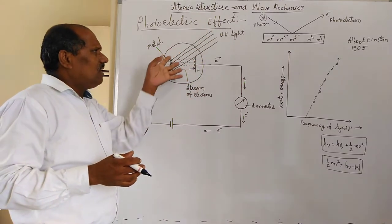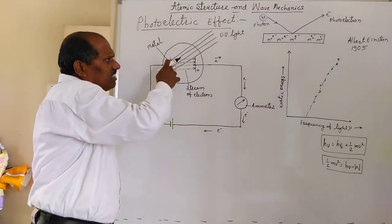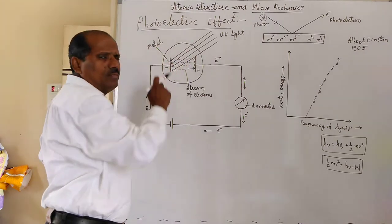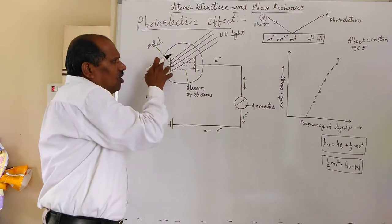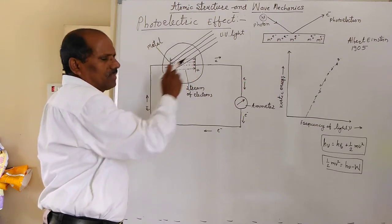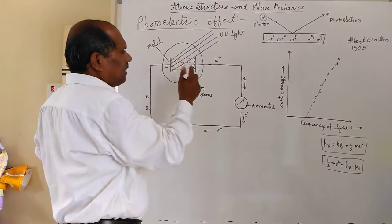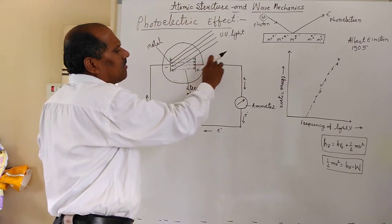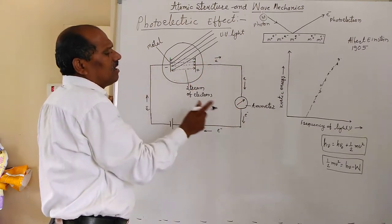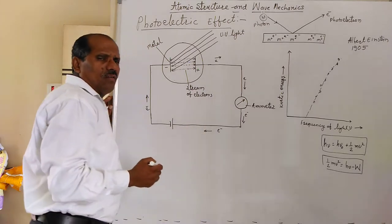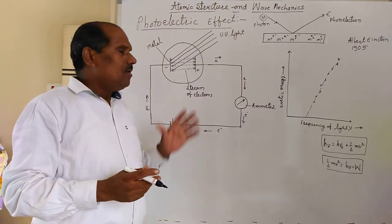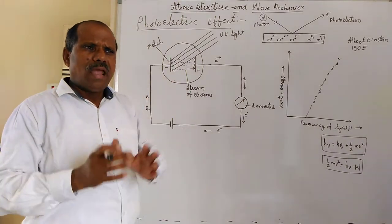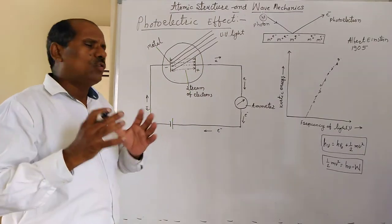When a beam of light of a sufficiently high frequency is allowed to strike on a metal surface in a vacuum, then electrons are ejected from the metal surface. Those electrons are pulled by the anode and start to flow through the circuit, and current is observed. This effect is called the photoelectric effect and the ejected electrons are called photoelectrons.